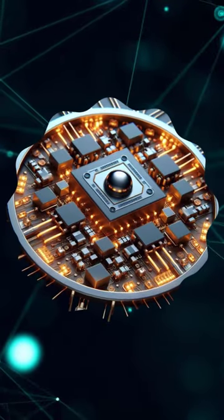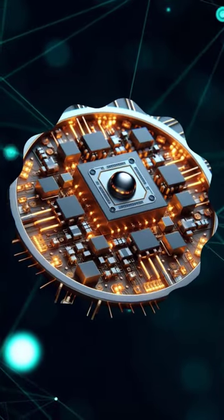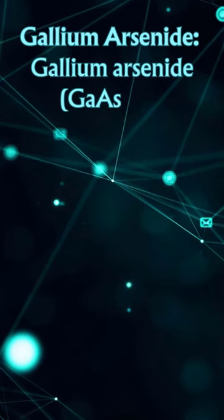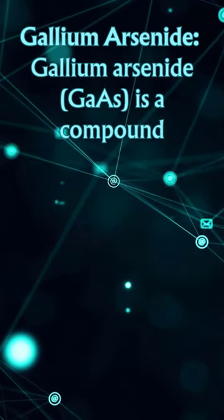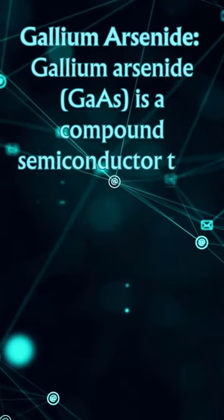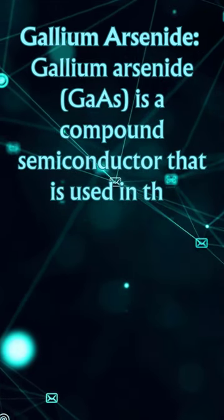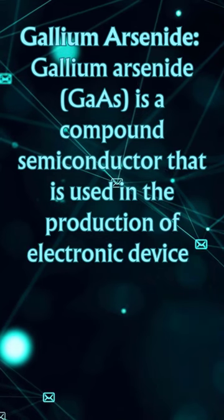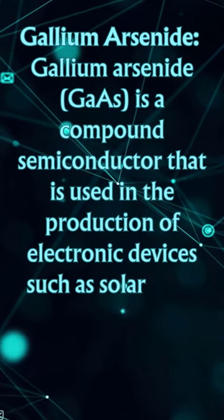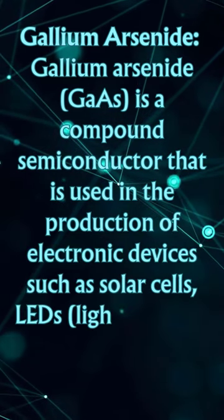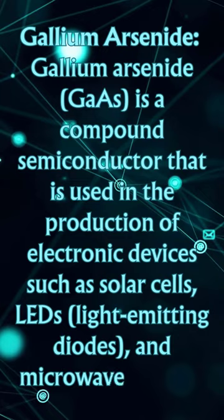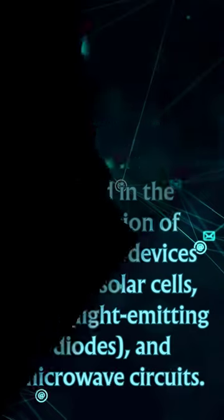Gallium Arsenide: Gallium Arsenide is a compound semiconductor that is used in the production of electronic devices such as solar cells, LEDs (light-emitting diodes), and microwave circuits.